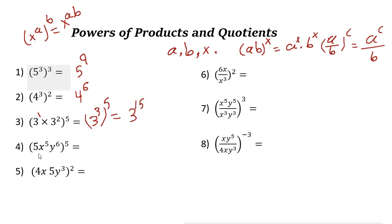Next example: (5x^5 · y^6)^5. Start with the number: 5^5. Then x^5 to the power of 5 is x^25, since 5 times 5 is 25. And y^6 to the power of 5 is y^30, since 6 times 5 is 30.